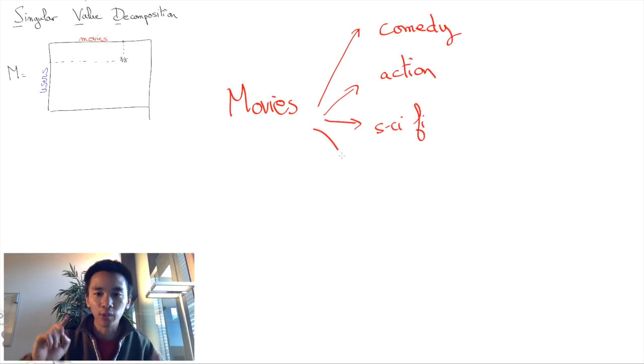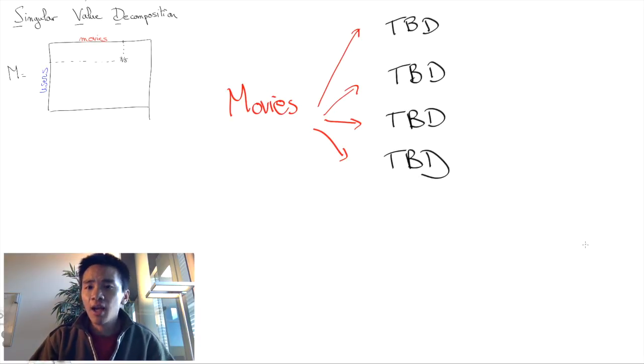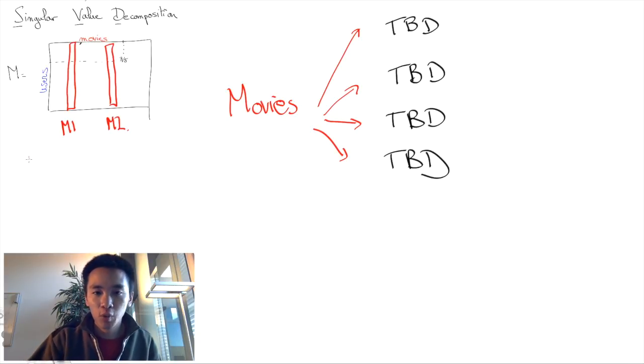However, crucially, we don't want to impose our own categories because our choices of categories are likely to be flawed. Instead, what we'd like to do is characterize such categories by how users have rated them. Intuitively, two action movies will be loved and hated by the same kind of users.